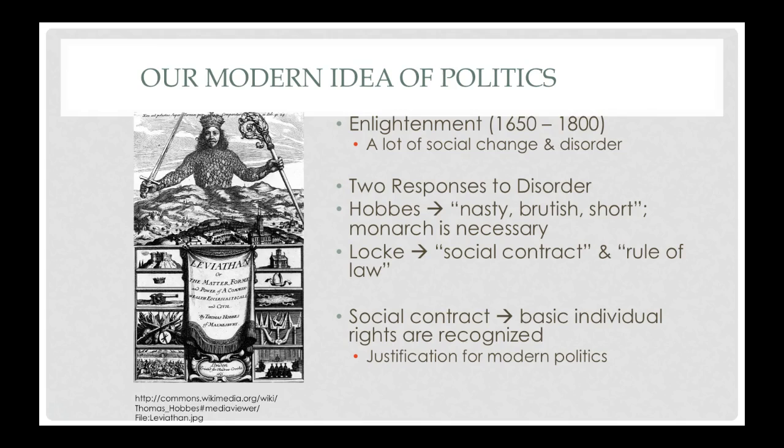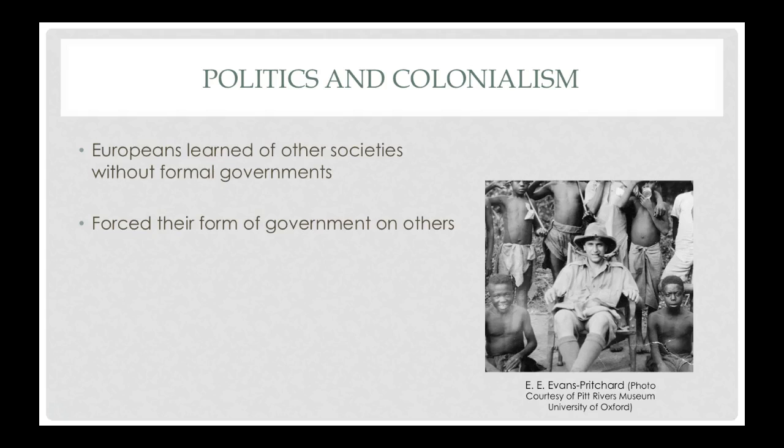Locke's idea of the social contract and the rule of law is our justification for modern politics. That's where our modern idea of politics in the Western world comes from. So it isn't a natural way that human politics function — it's actually a response to a lot of social change and reorganization that was happening during the Enlightenment.